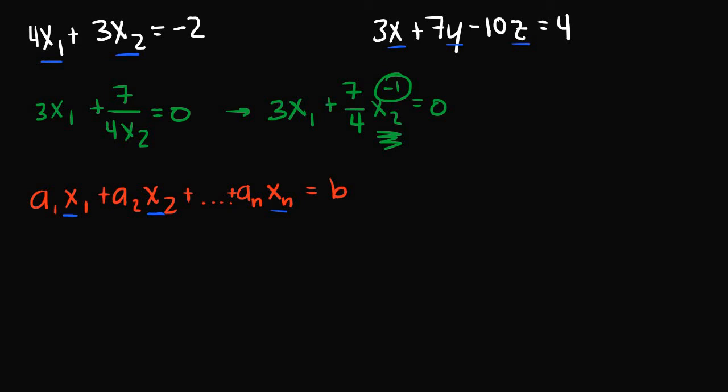And all of the knowns, so the values that we know, are a₁, a₂, a₃, a₄, all the way up to aₙ, as well as b. We know the value of b.